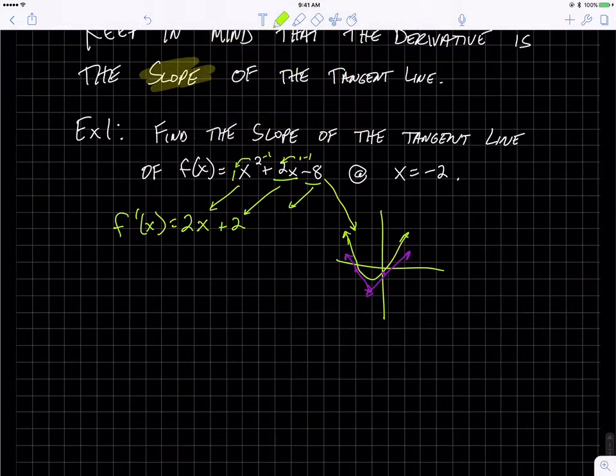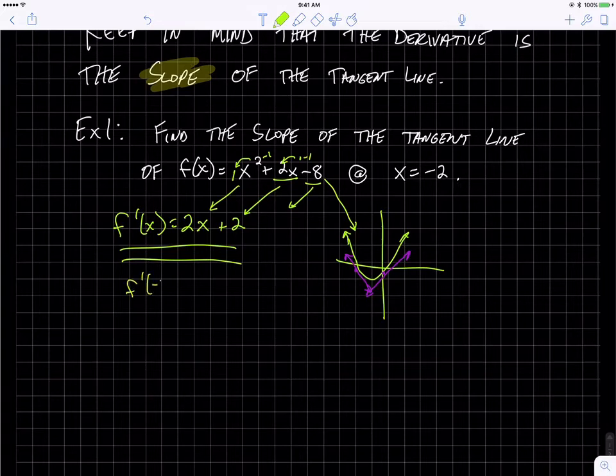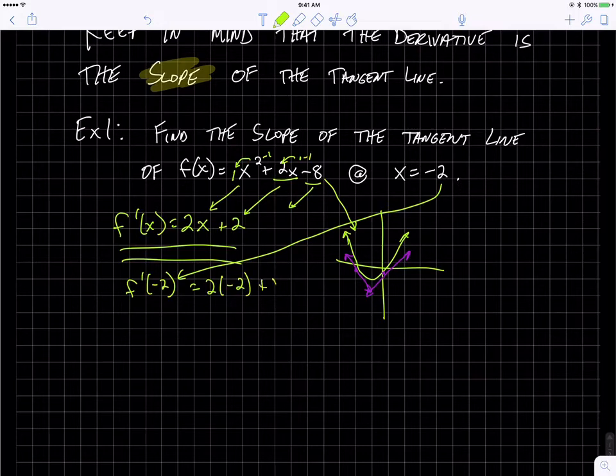This right here is not the equation of the tangent line. That represents the slope of the tangent line. So now we want the slope at our specific point, which is negative 2. I'm going to plug that into the derivative. And I get negative 4 plus 2, I get negative 2. So the slope of the tangent line at that point is negative 2.